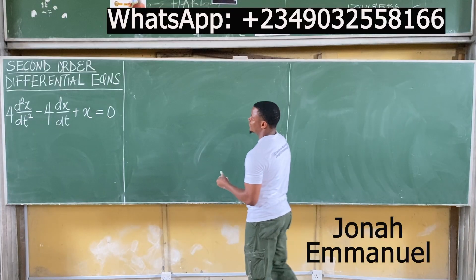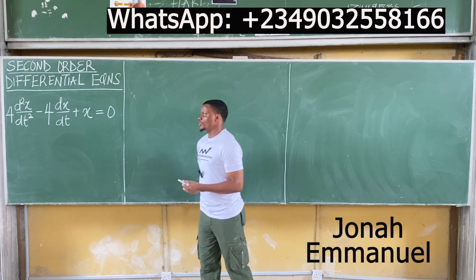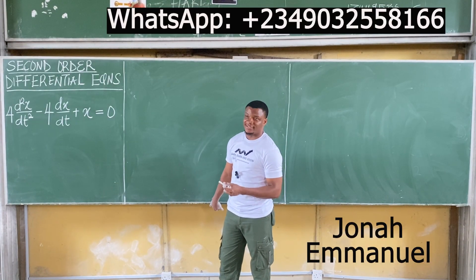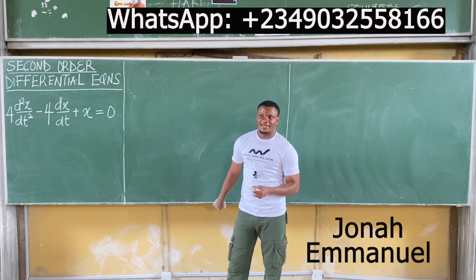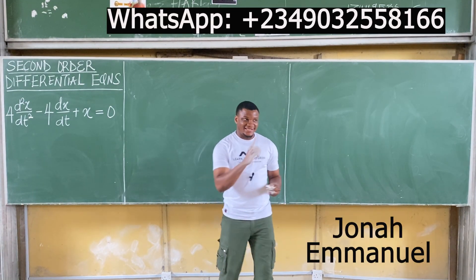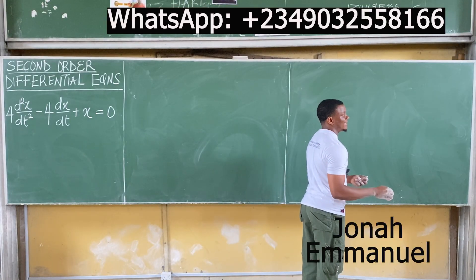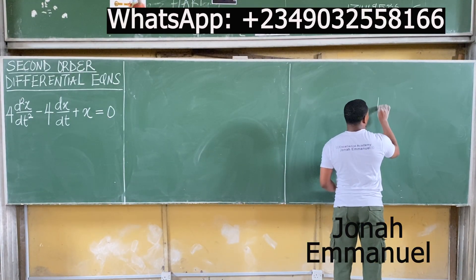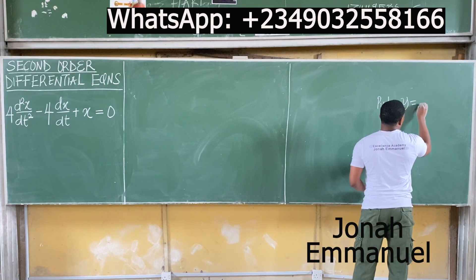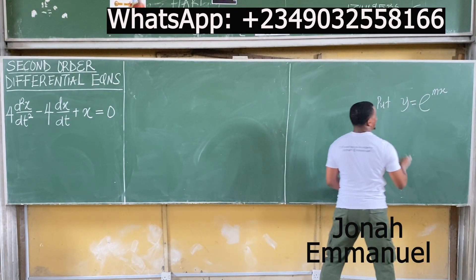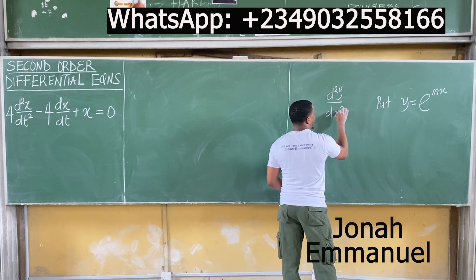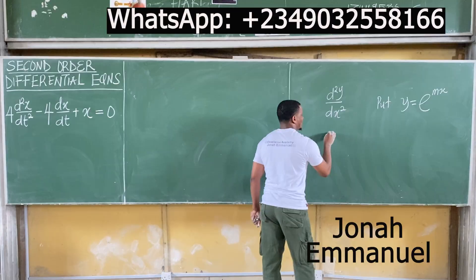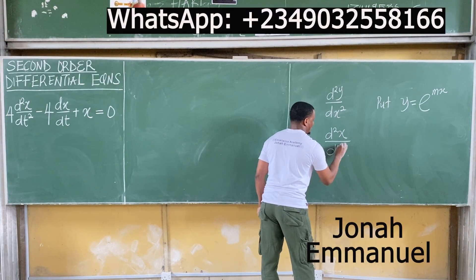We're given another second order differential equation: 4d²x/dt² minus 4dx/dt plus x equals 0. This is no longer in terms of y and x — it's now dx/dt. When you have it in terms of y and x, you put y as exponential mx for equations of the form d²y/dx². What if you now have d²x/dt²? How do you solve this?